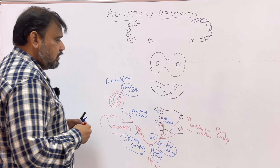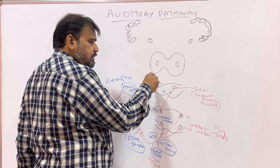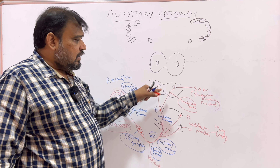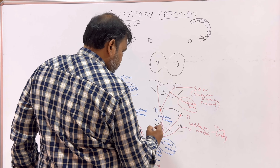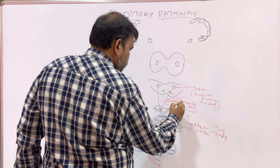The first order neuron ends in the dorsal and ventral cochlear nuclei. From here the second order neuron starts. It ends in the superior olivary nucleus. The same side pathway ends in the same side superior olivary nucleus, and also crosses to the opposite superior olivary nucleus. The fibers which cross to the opposite side go via the trapezoid body — it has to pass through the trapezoid body — then reach the superior olivary nucleus. This is the second order neuron.